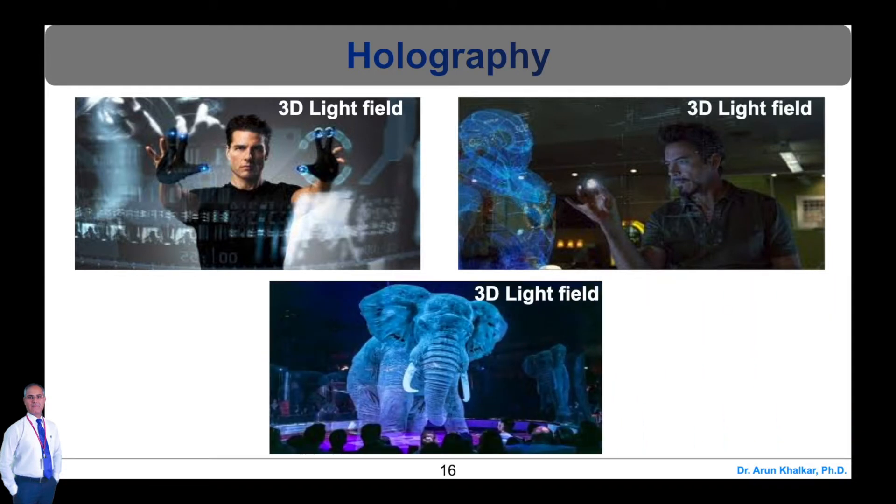A hologram is a physical recording of an interference pattern which uses diffraction to reproduce a three-dimensional light field, resulting in an image which retains the depth, parallax, and other properties of the original scene.